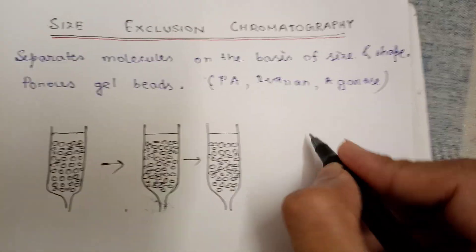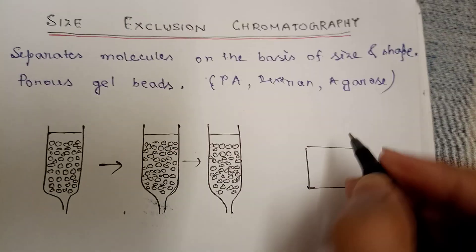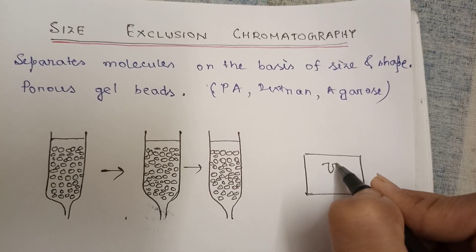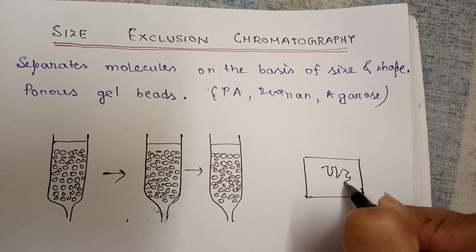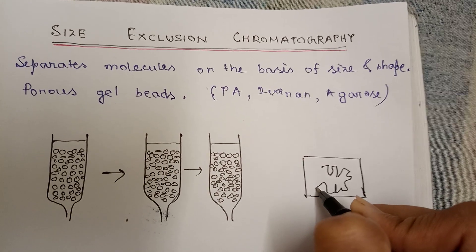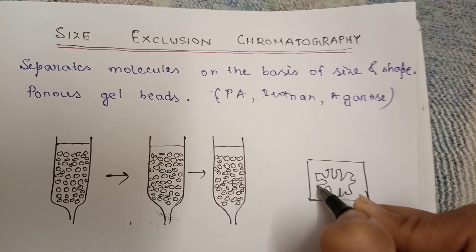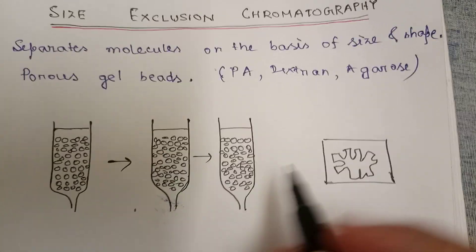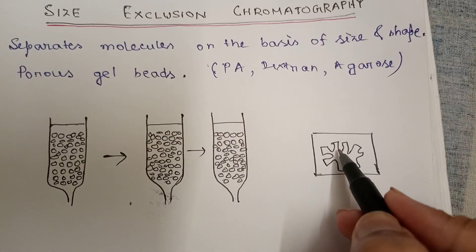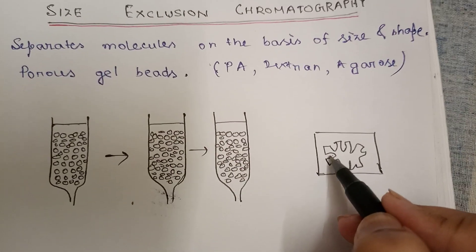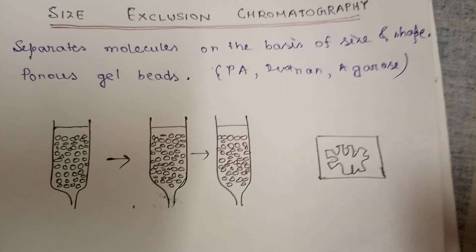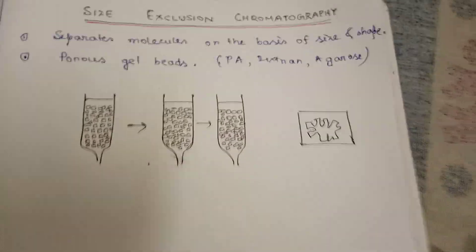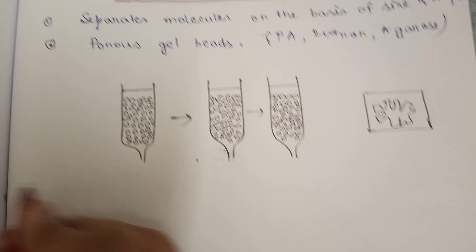Let me explain what the pores mean. This is the bead — if you zoom into it, you can see there are pore regions throughout. Here, here, here — these are the poring regions. So the pores inside the bead represent the stationary phase.